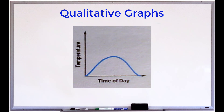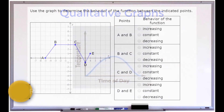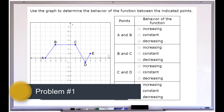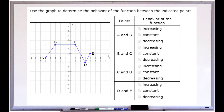Now let's look at some practice problems to help us practice working with qualitative graphs. Here's our first qualitative graph problem. It says: use the graph to determine the behavior of the function between the indicated points. When it says behavior of the function, all it's really talking about is whether it's increasing, decreasing, or staying constant, meaning it's not changing at all.